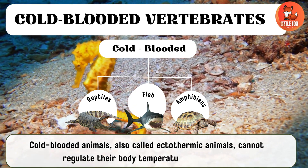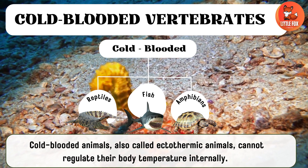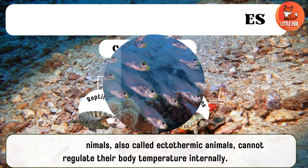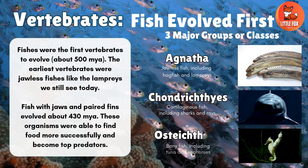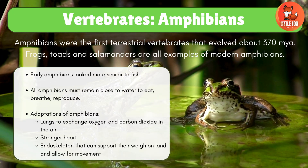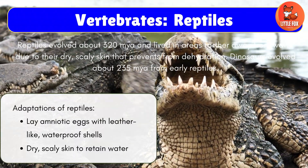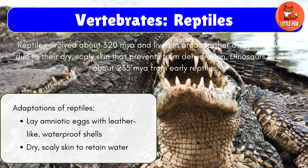Cold-blooded animals are further classified into fish, amphibians, and reptiles.